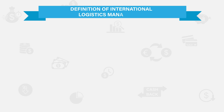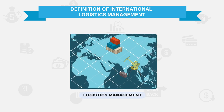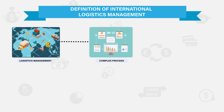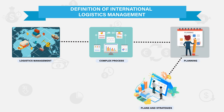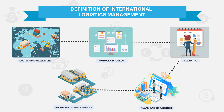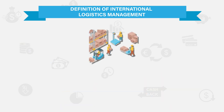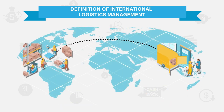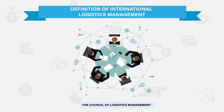International Logistics Management is a complex process that involves planning, implementing plans and strategies, and controlling goods flow and storage, from the point of their origin to the point where they will be consumed, which is in a foreign country, according to the Council of Logistics Management.